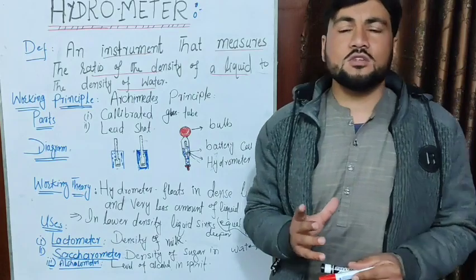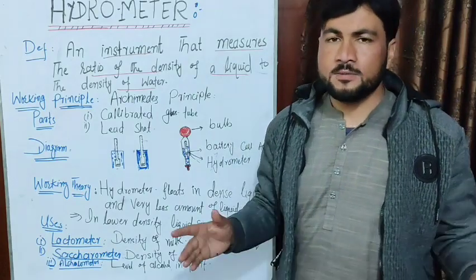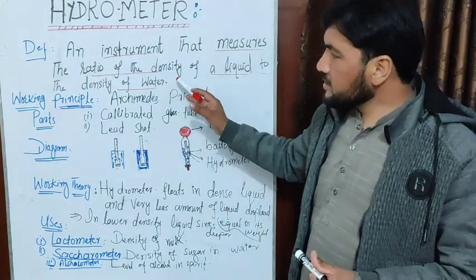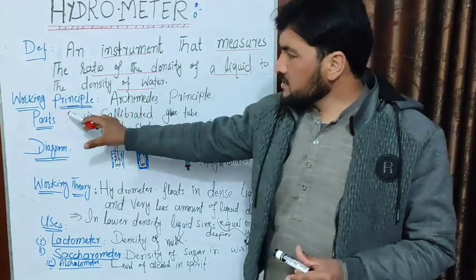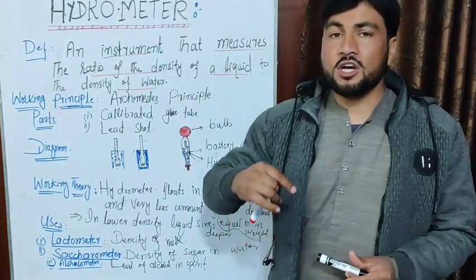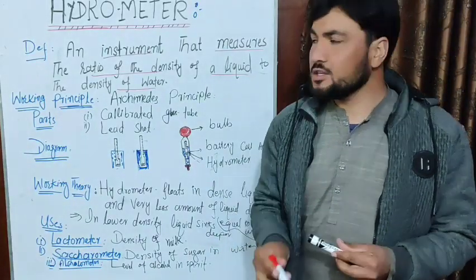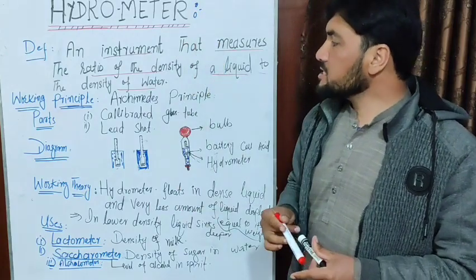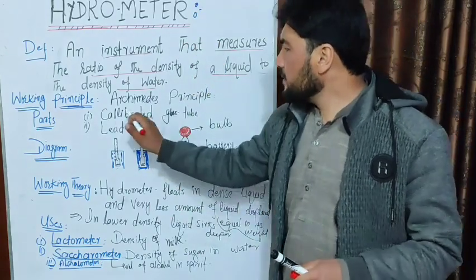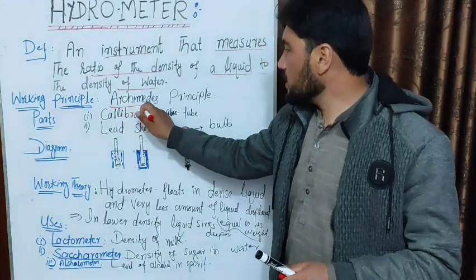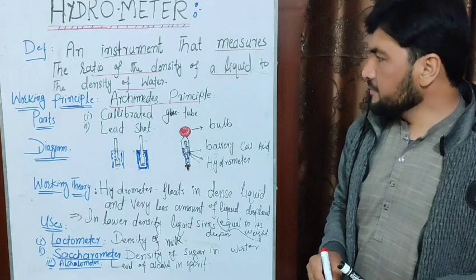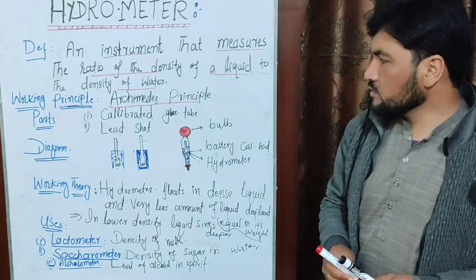The definition is based on the working principle. The working principle is the Archimedes principle. We have Archimedes principle as the working principle of the hydrometer.